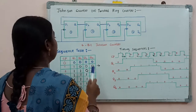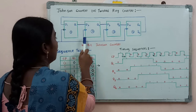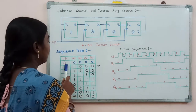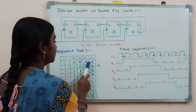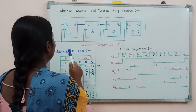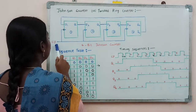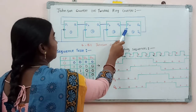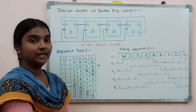Now we will see the operation. Before applying the clock pulse, we have to clear all the flip-flop outputs. So before applying the clock pulse, we are going to make Q1, Q2, Q3, Q4 outputs equal to 0 by using the clear input. Now we will apply the clock pulse. This clock pulse is a negative edge-triggered type of flip-flop, so for a transition from 1 to 0, all the flip-flops are going to be triggered.